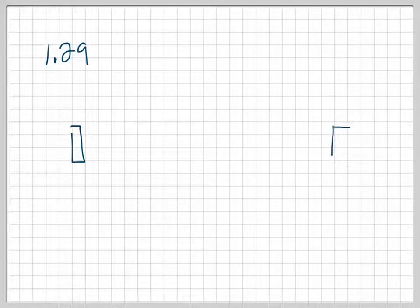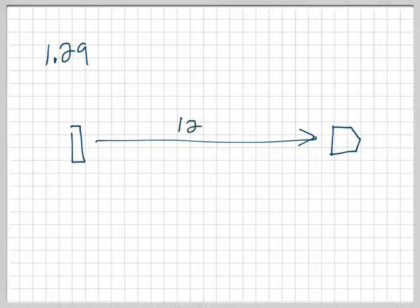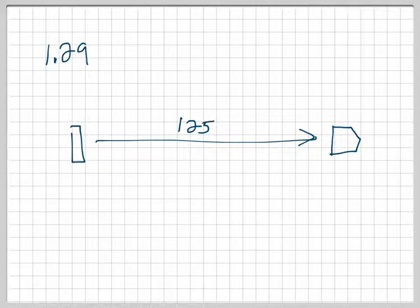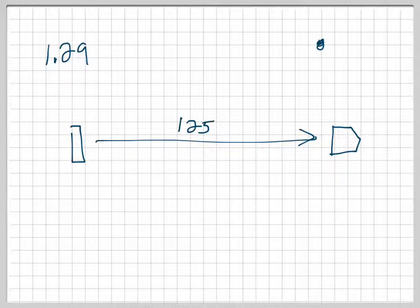Number 1.29: we have a pitcher. Here's the pitching mound; here's home plate. The pitcher is trying to pitch a ball at 125 kilometers per hour. There's a crosswind of 28 kilometers per hour blowing from the left. From the pitcher's perspective, that means it's coming from up here, so I would actually draw the wind going to the right, and this would be 28.